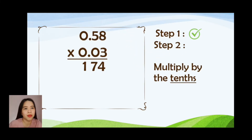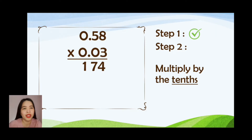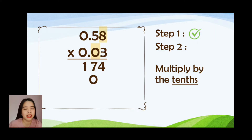Step number 2: multiply by the tens. 0.58 multiplied by 0. Let's start with 8 times 0 — we are going to write your answer under the tens place value, which is 0. 5 times 0 will also have the answer of 0. And 0 times 0 is 0.